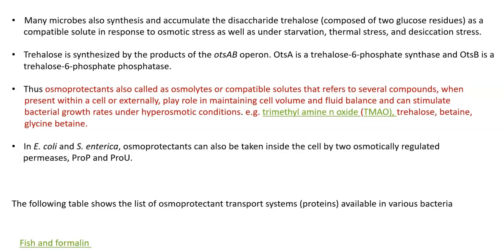Many microbes also synthesize and accumulate the disaccharide trehalose, composed of two glucose residues, as a compatible solute in response to osmotic stress. Trehalose is also accumulated under starvation, thermal stress, and desiccation stress. For its accumulation, it must first be synthesized using the OTS-AB operon, where OTS-A encodes trehalose-6-phosphate synthase and OTS-B encodes trehalose-6-phosphate phosphatase. Both enzymes are involved in trehalose synthesis, which then accumulates in cells as an osmoprotectant.